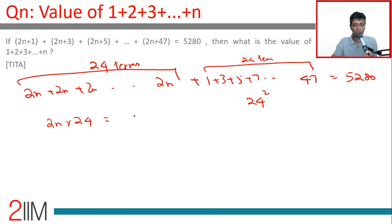equals 5280 minus 24². This should be a multiple of 24. Let's cancel out: 2n equals 5280 by 24, which equals 220 minus 24.